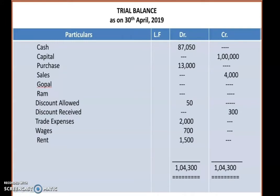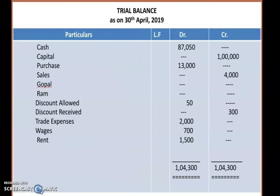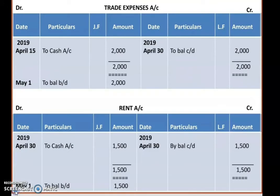In our previous class we learned the process of posting items from the journal to the ledger, and also the process of closing the accounts and finding the balance carried down and brought down. With that concept in mind, you now have to prepare the trial balance. The heading is written as 'Trial Balance as on 30th April 2019.' The format includes: particulars, ledger folio, debit, and credit. To write each item, we look into the ledger.